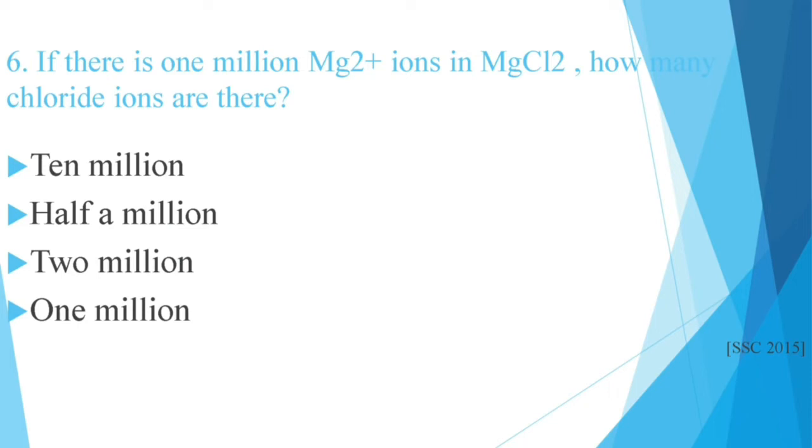Question number 6: If there is 1 million Mg2+ ions in MgCl2, how many chloride ions are there? Options: 10 million, half a million, 2 million, 1 million. This question is in SSC 2015. The correct answer is 2 million.